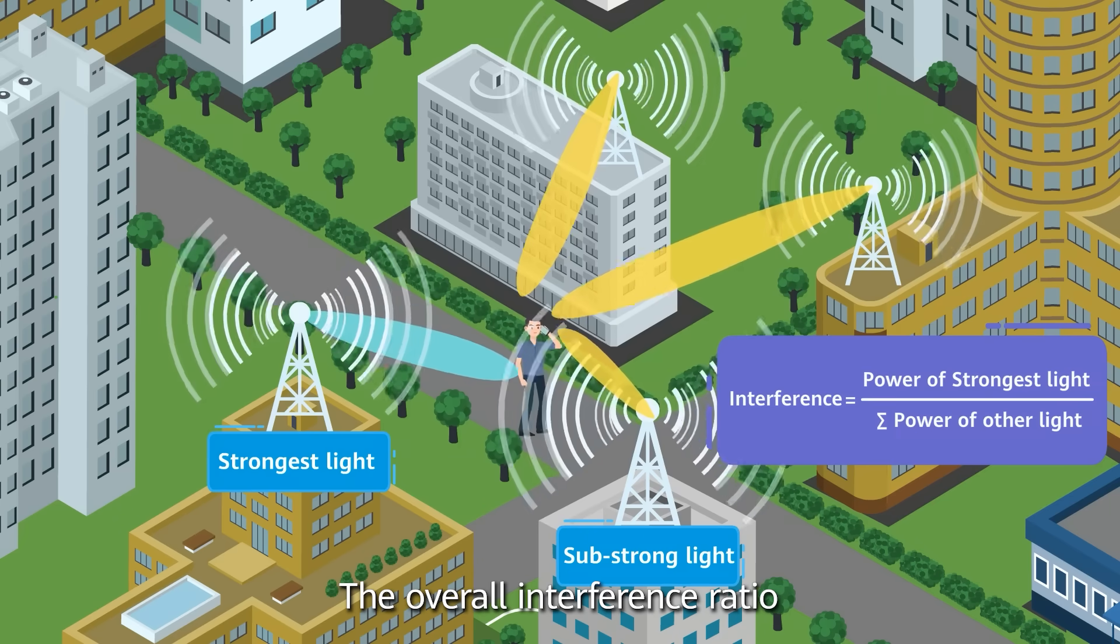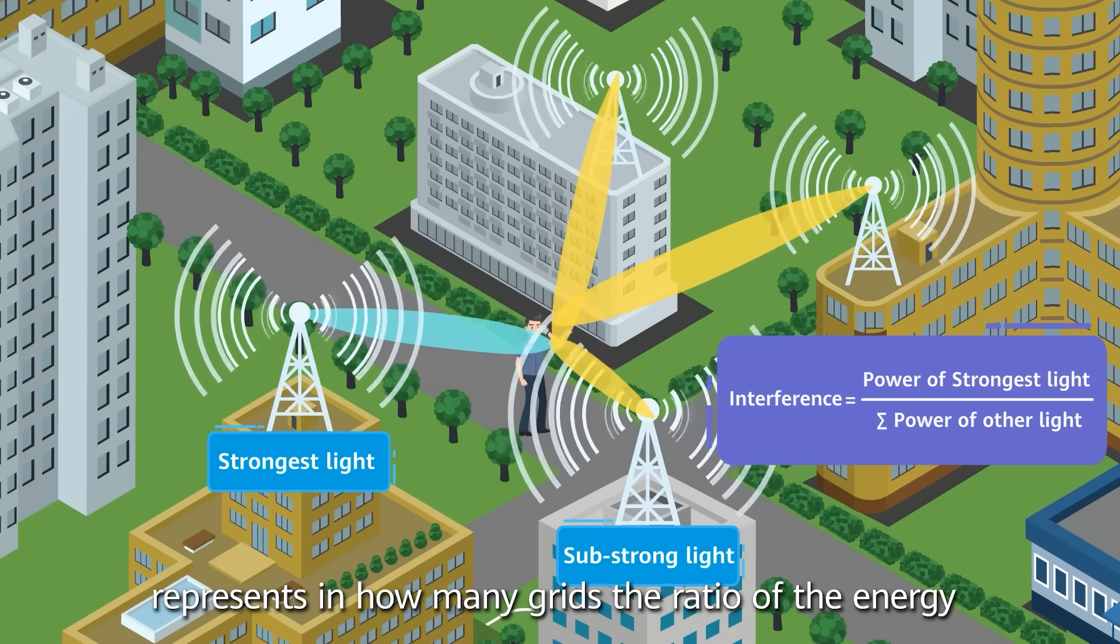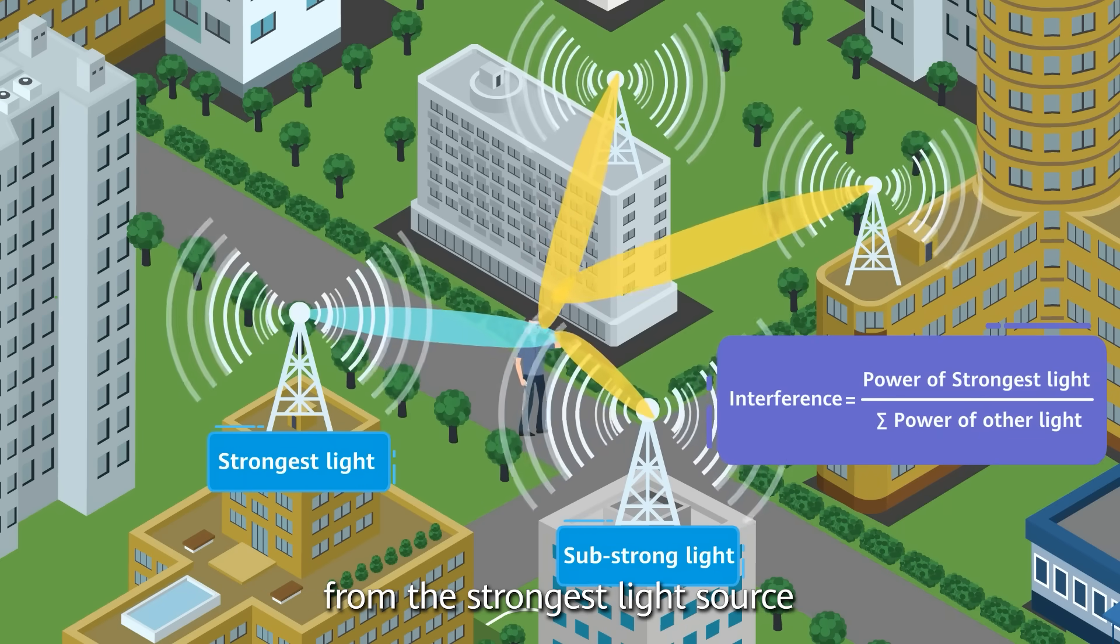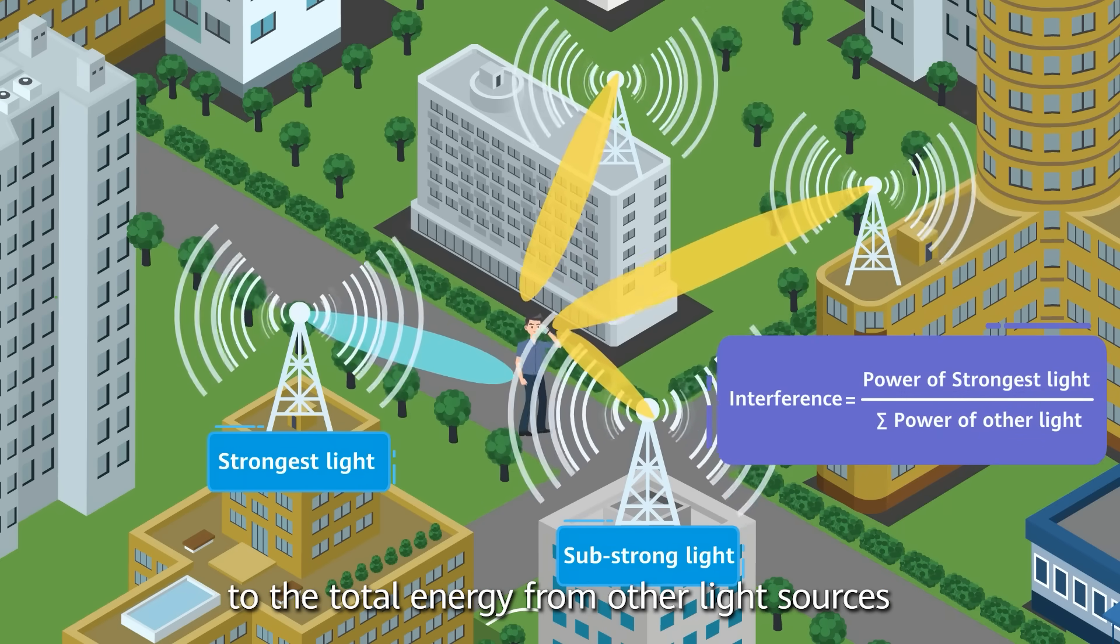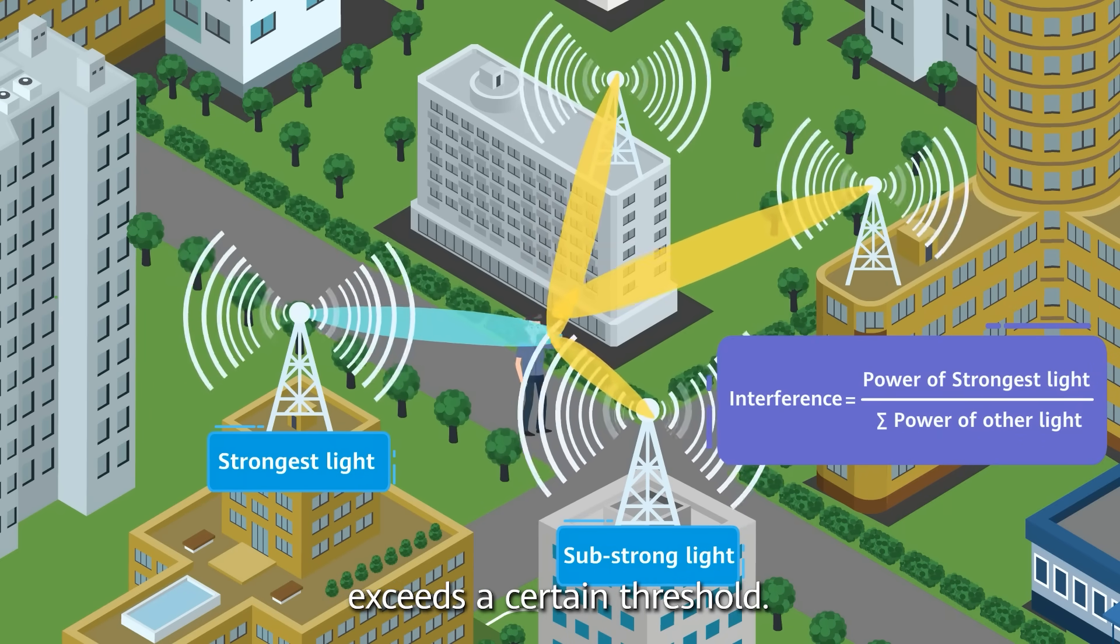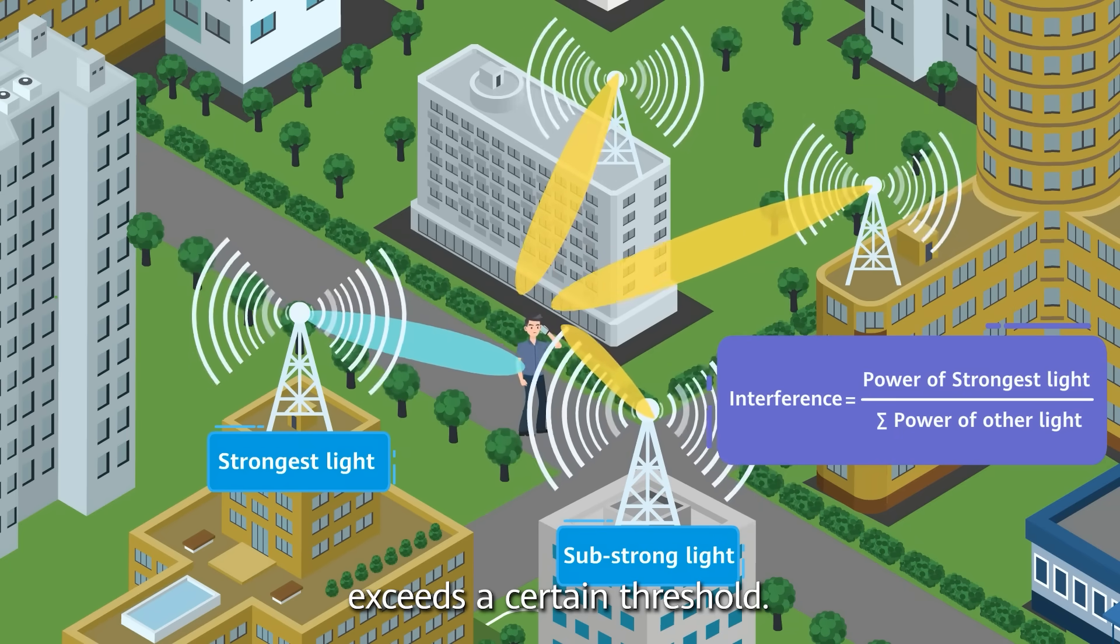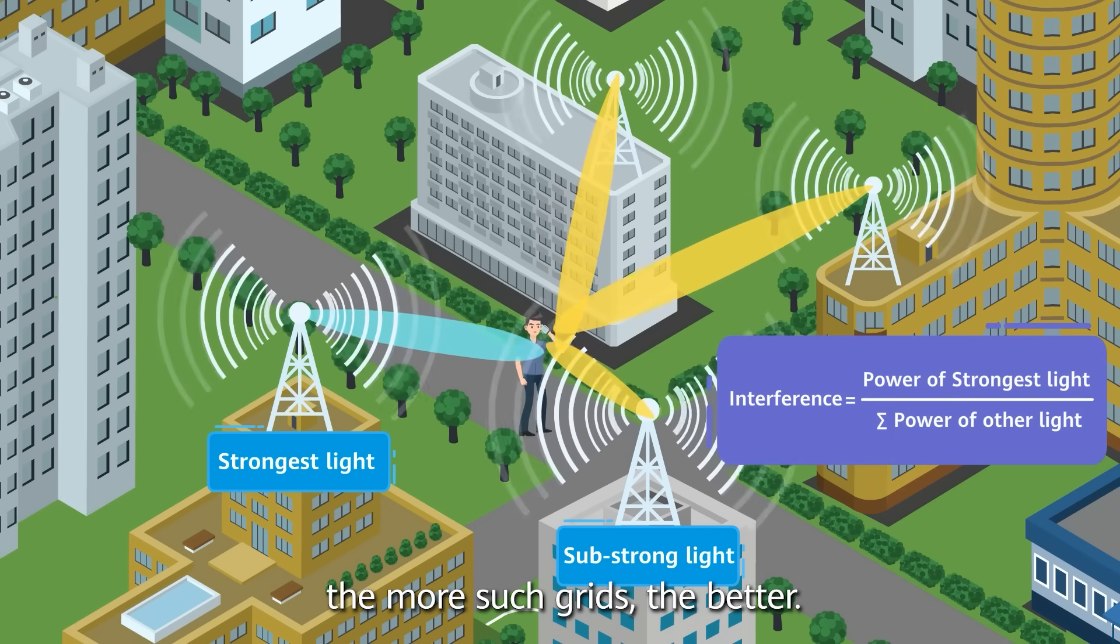The overall interference ratio represents in how many grids the ratio of the energy from the strongest light source to the total energy from other light sources exceeds a certain threshold. As with the previous two, the more such grids, the better.